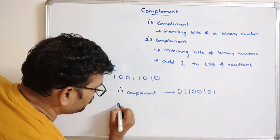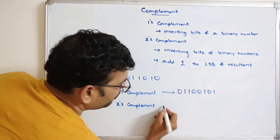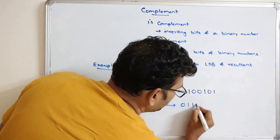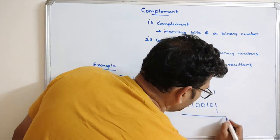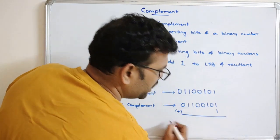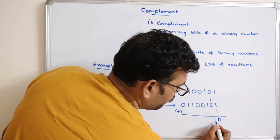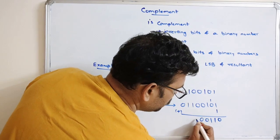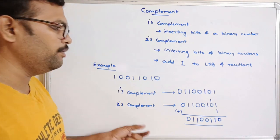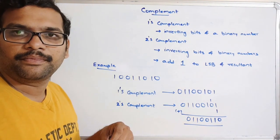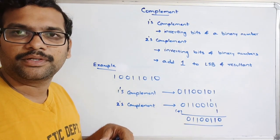Coming to the 2's complement: after inverting the bits we add 1 to the LSB. So taking 0110010101 and adding 1: 1 plus 1 is 0 with a carry. The carry propagates, giving us 0110010110. So 0110010110 is the 2's complement of the given binary number.